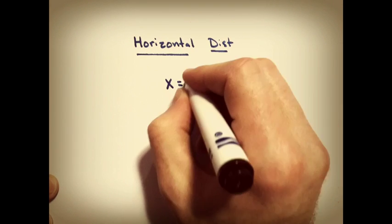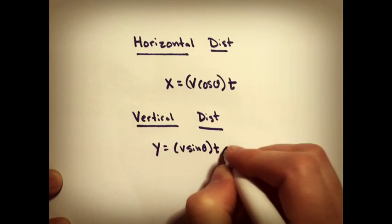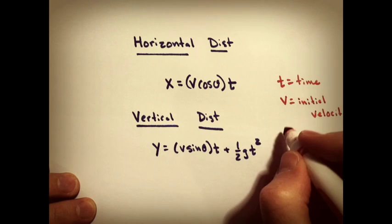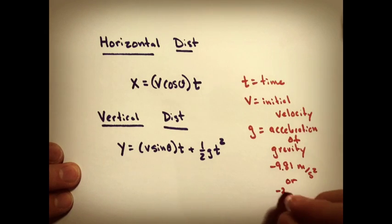If we want to talk about the distance traveled, distance is rate times time, so it should be the horizontal velocity times time. The vertical distance has to account for gravity, so we have the one-half gt squared on the end. t is time, v is initial velocity, g is acceleration of gravity.